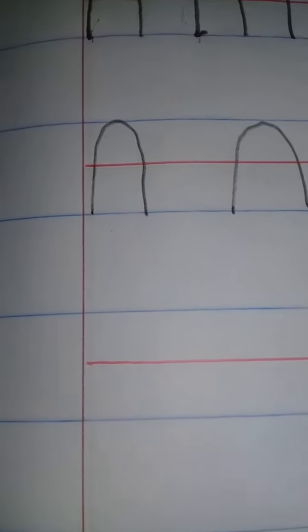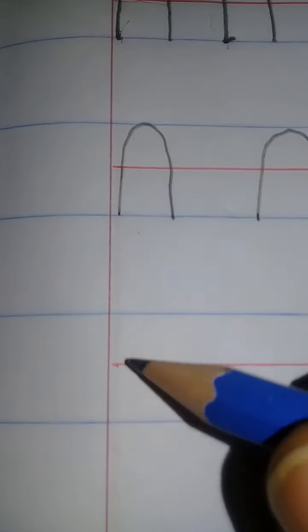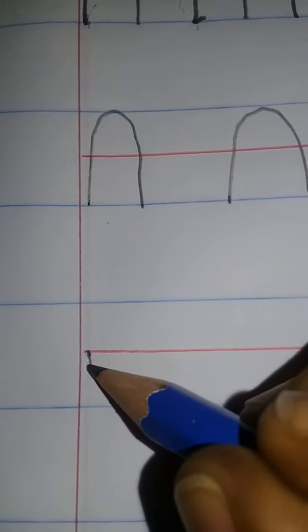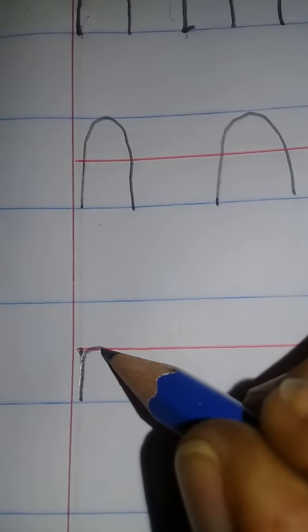Our first letter that uses this pattern will become an R. Because it's a common letter we start in between the two blue lines. We start halfway in between, we go down, up, and around to the right and stop.